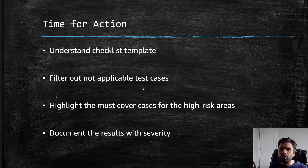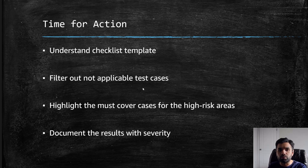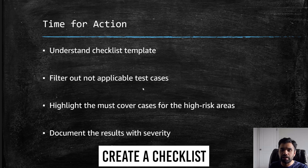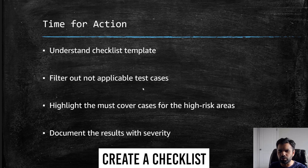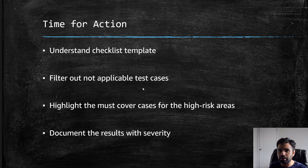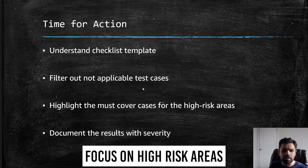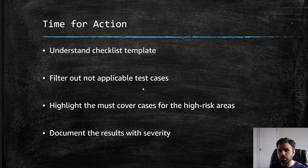Once you've gathered all the information, it's time for action. Download or create a checklist of what you're going to do in the code review. You don't want to check 100 items — focus on what your scanners don't cover, or what your scanner doesn't support for certain programming languages. Define which test cases are required, mark which are not applicable or low risk, and focus only on the high-risk areas. Once you finish going through the checklist, document the results with severity ratings.